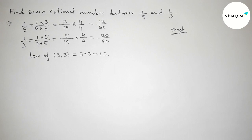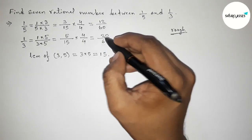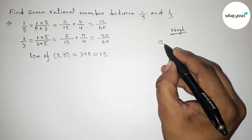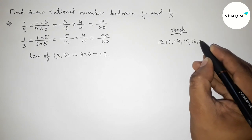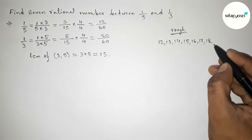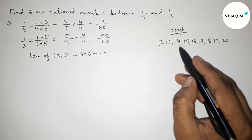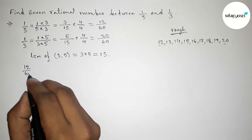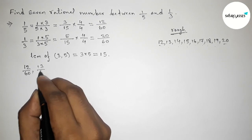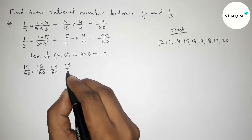The denominators are 60 and equal. Now write down the integers between 12 and 20. We can get 7 integers between 12 and 20. Write down all the rational numbers: 13 by 60, 14 by 60, 15 by 60, 16 by 60, 17 by 60, 18 by 60, 19 by 60.